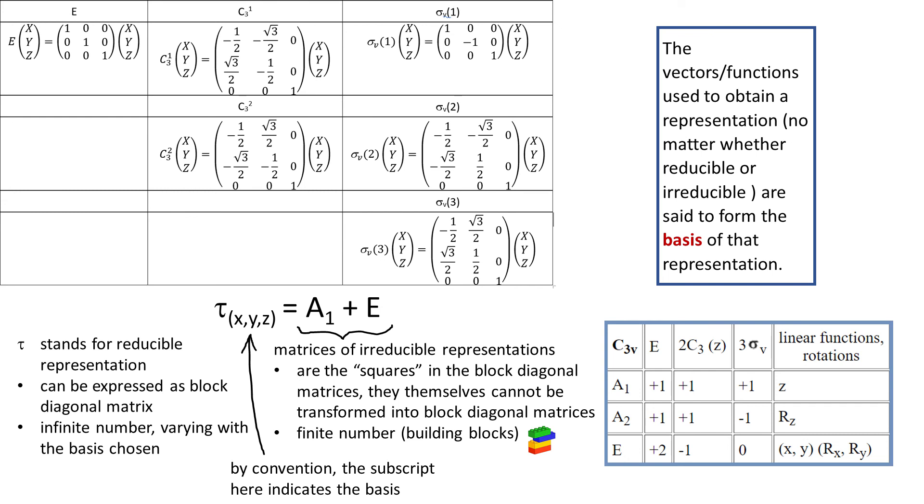So as I said earlier, irreducible representations are like building blocks. One more thing, just notice that for E and sigma v1 matrices, you could say that they are made by three one by one blocks. But we need to consider all the other matrices for all the other operations, and they have to break into the same blocks. And the rest of the matrices break only to two blocks.